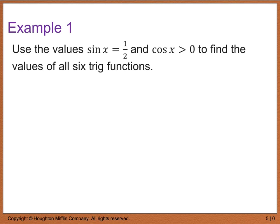From this point forward, we'll go through a series of examples — please write down any questions and I'll go over them in class. Example 1: use the values sine x equals 1/2 and cosine x greater than zero to find the values of all six trig functions. I'm going to sketch a quadrant. Positive cosine means we're in quadrant one or quadrant four. Since sine x is also positive, the only quadrant satisfying both conditions is quadrant one.